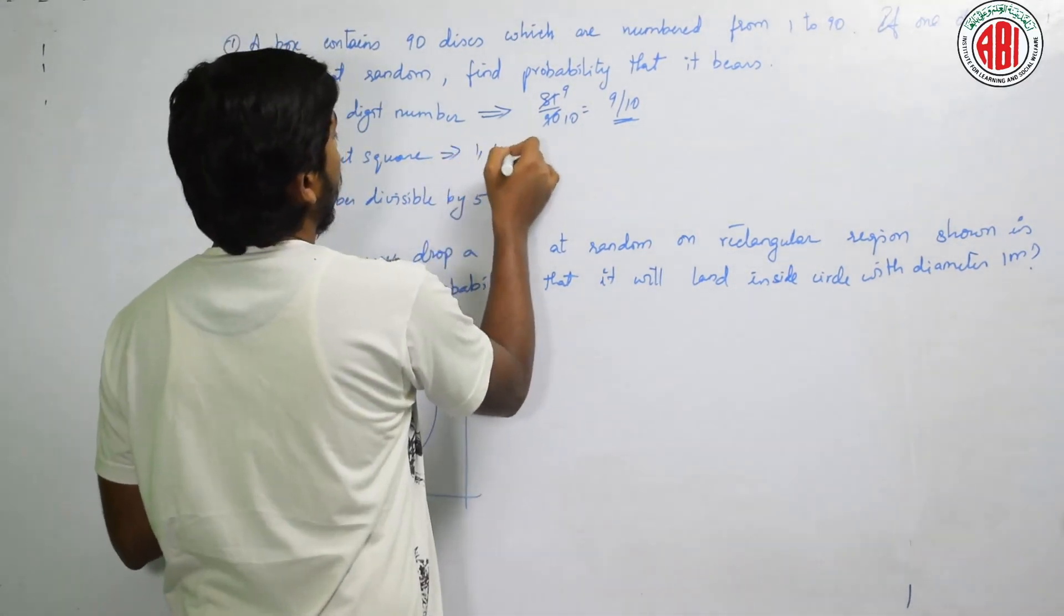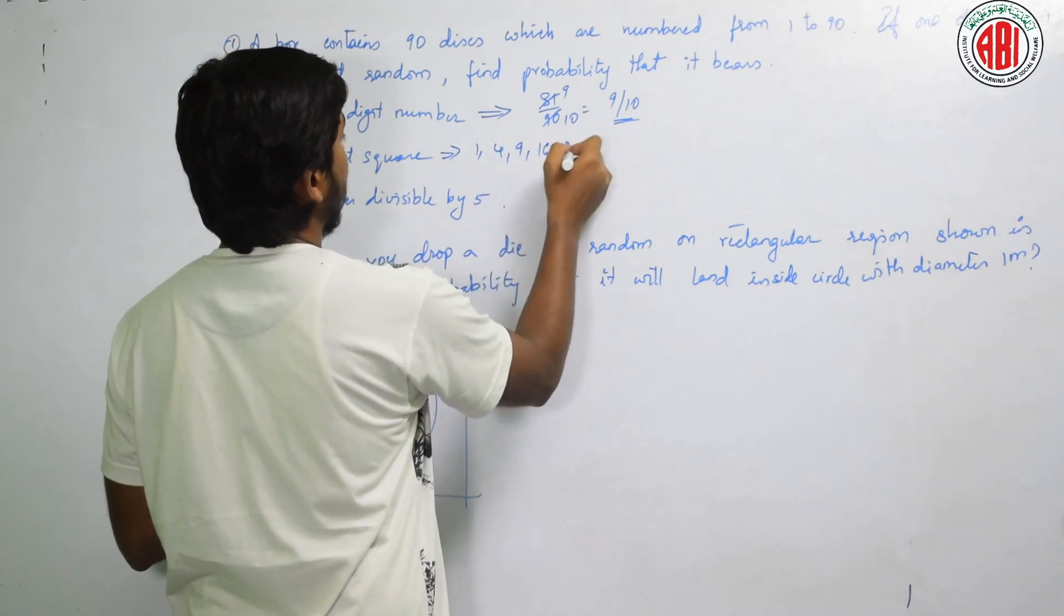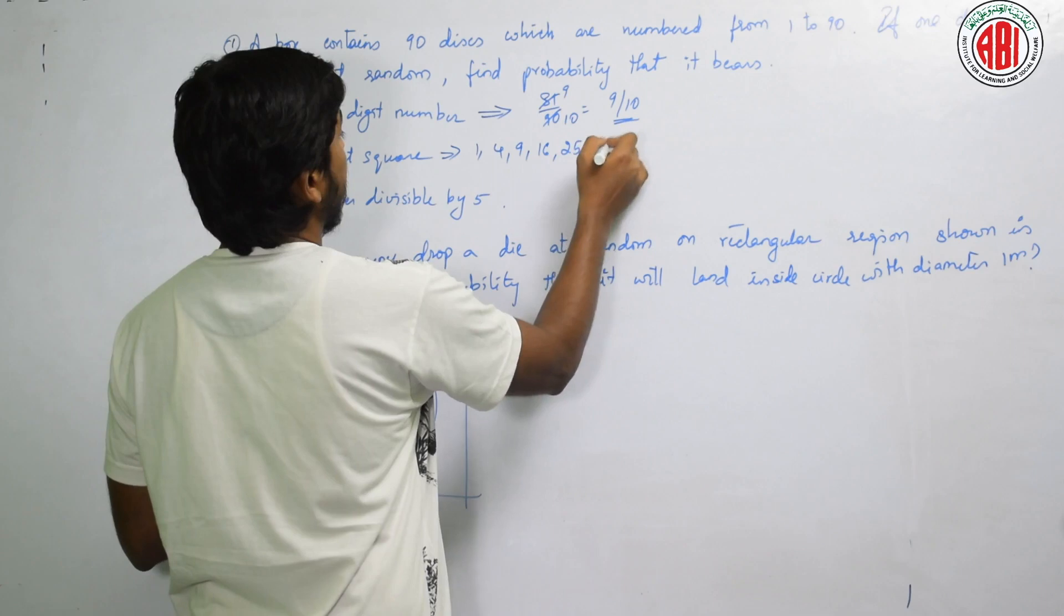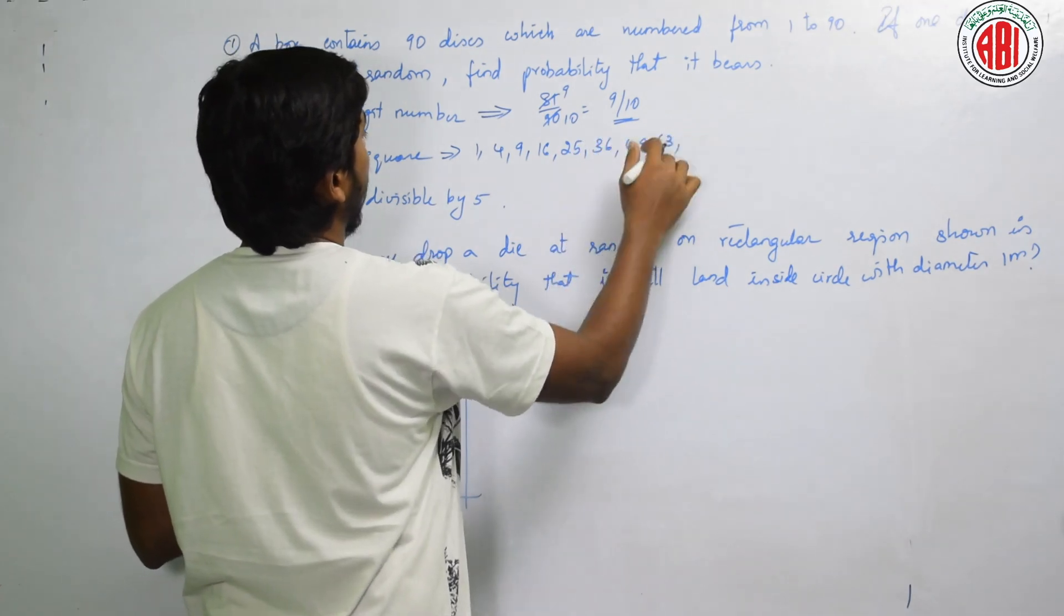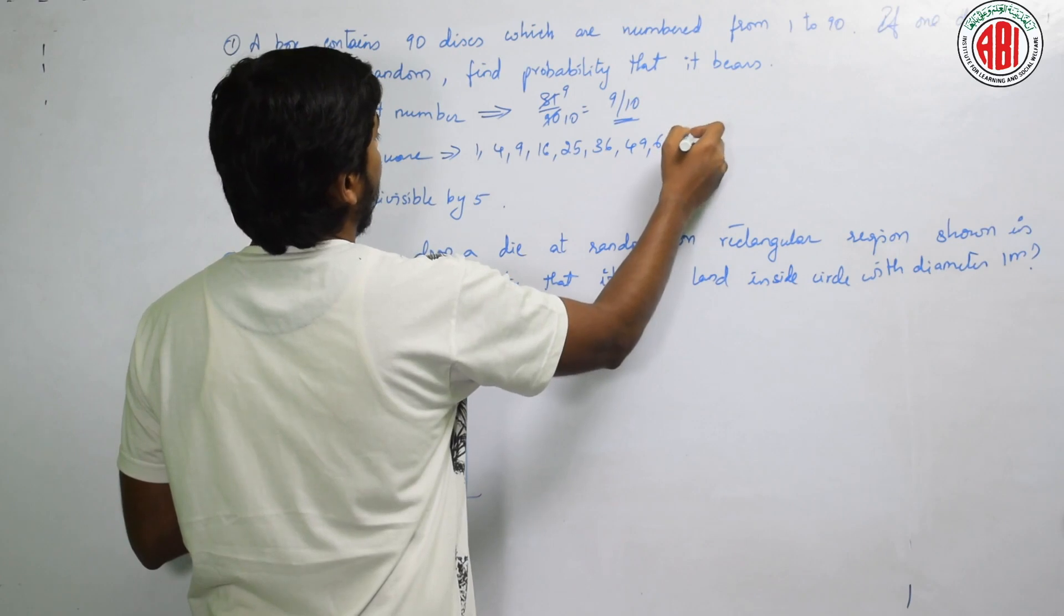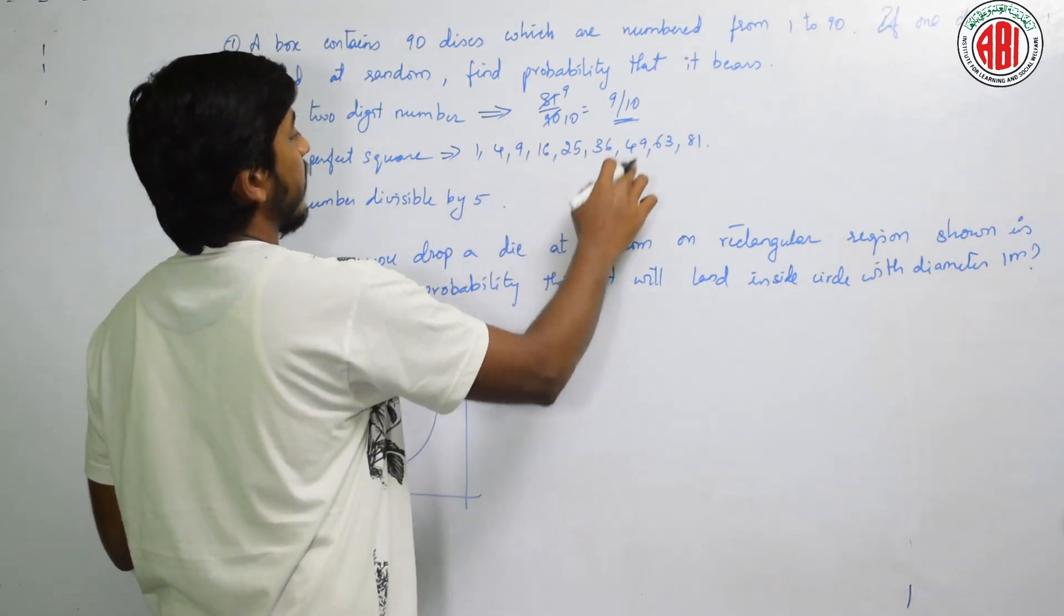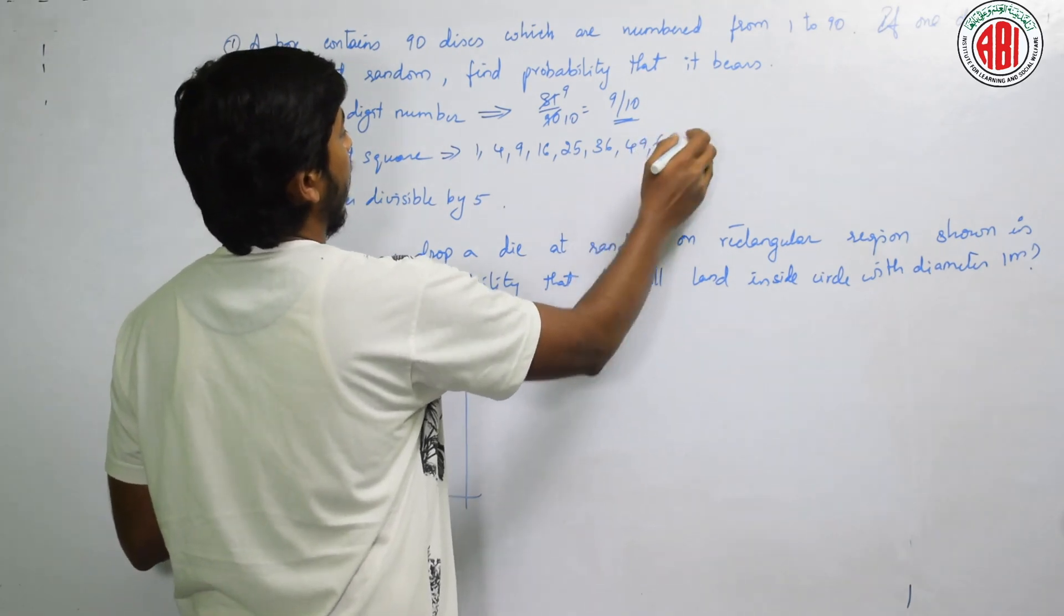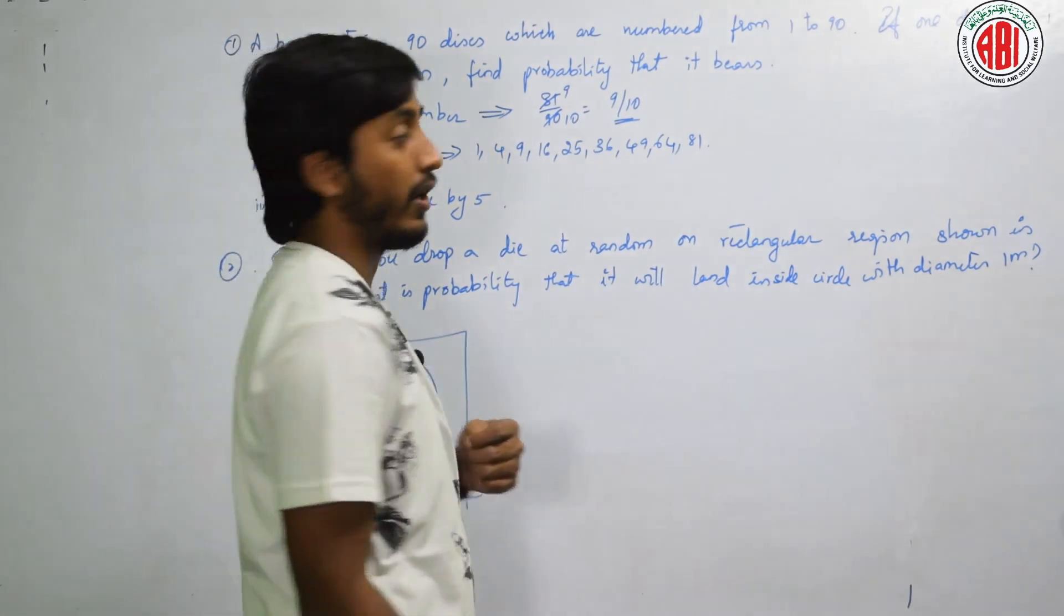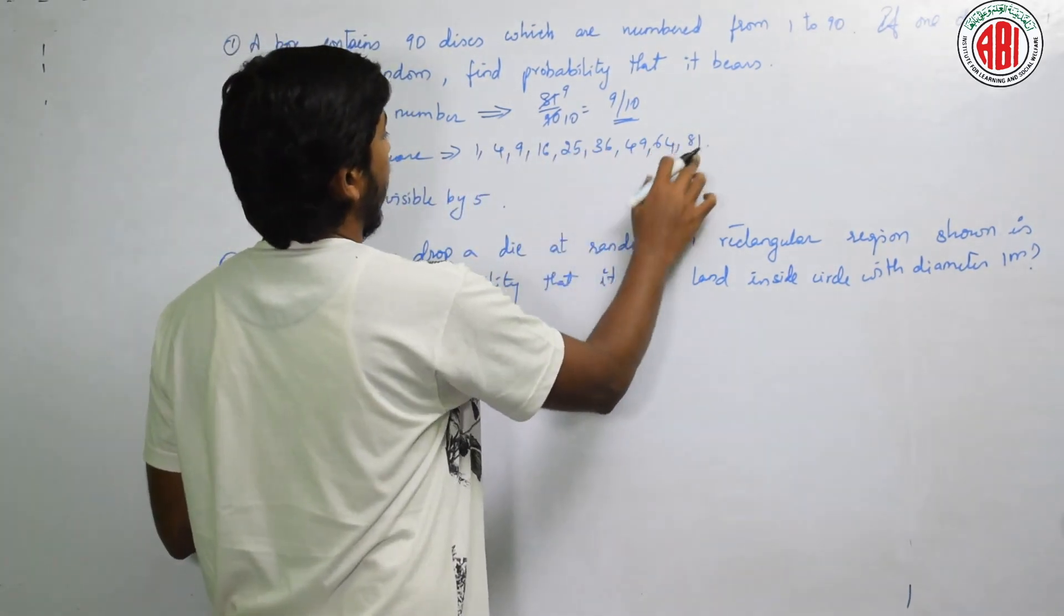Perfect squares are: 1, 4, 9, 3 times 3. 4 times 4 is 16. 5 times 5 is 25. 6 times 6 is 36. 7 times 7 is 49. 8 times 8 is 64. And 9 times 9 is 81. 1, 2, 3, 4, 5, 6, 7, 8, 9.